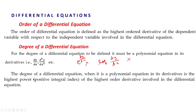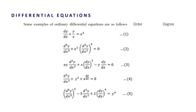If the degree is defined — that is, the equation is a polynomial equation in its derivatives — then the degree is the highest power of the highest order derivative involved in the differential equation. We first identify the order, then find the highest power of that highest order derivative. These are some examples of differential equations for which we will find the order and degree.